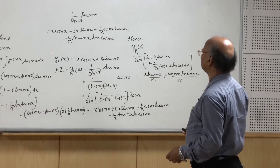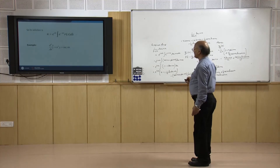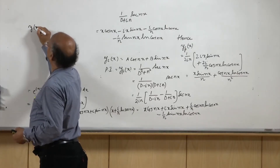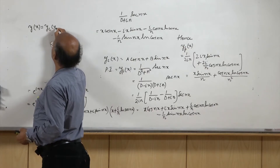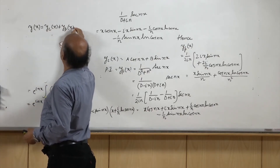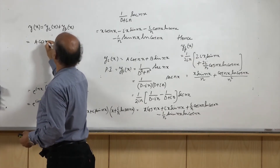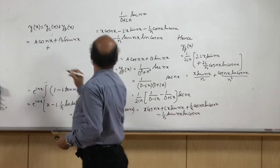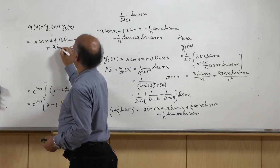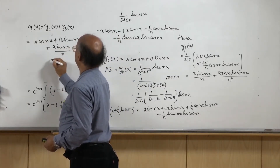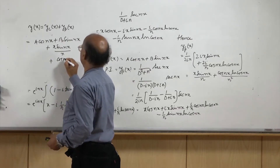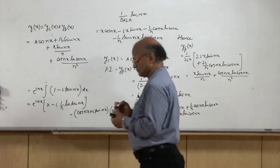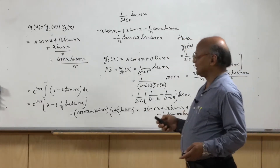Hence the general solution of d²y/dx² + n²y = sec(nx) is y(x) = y_c(x) + y_p(x) = A·cos(nx) + B·sin(nx) + x·sin(nx)/n + cos(nx)·ln|cos(nx)|/n².